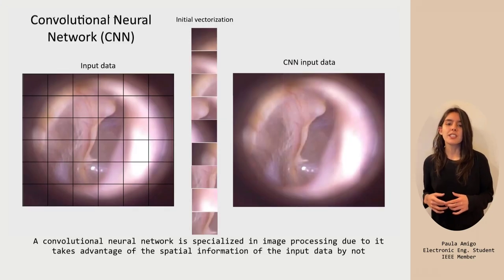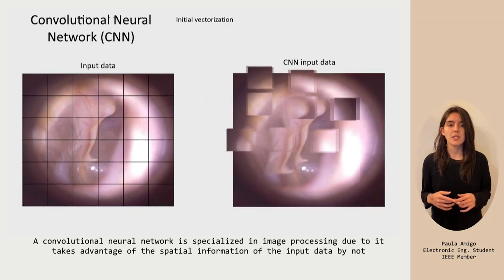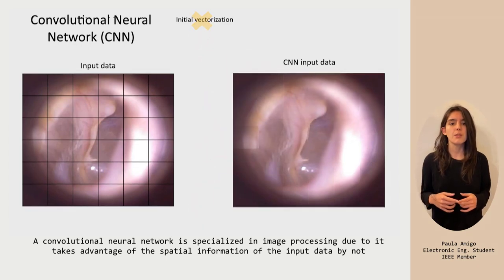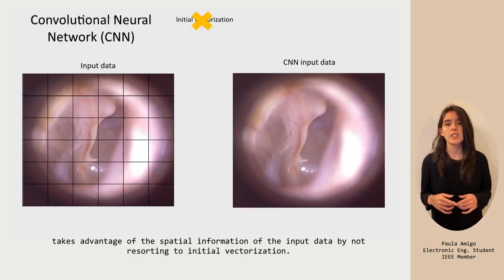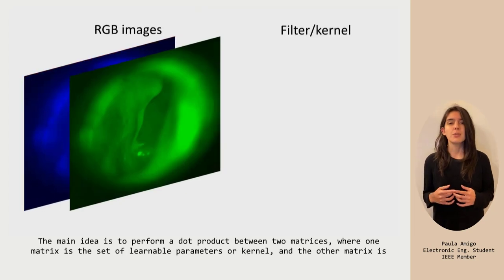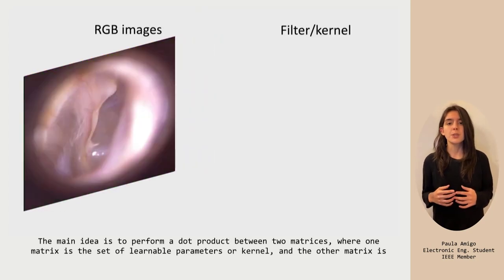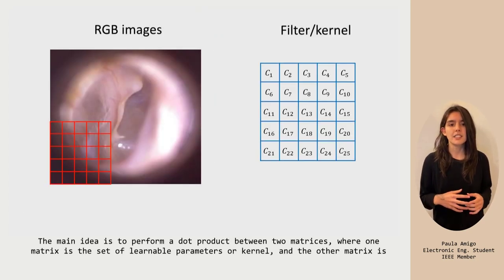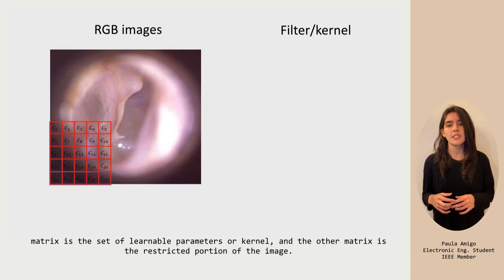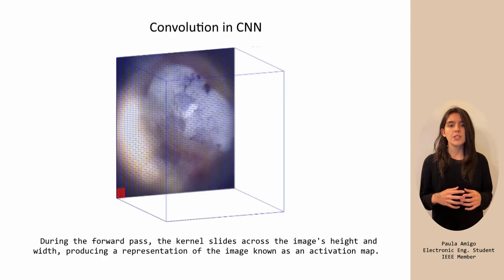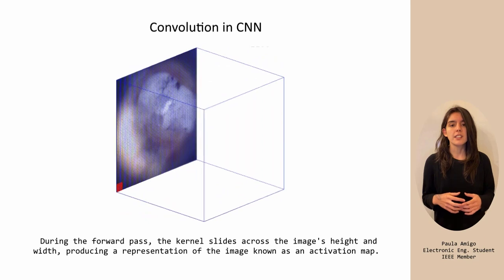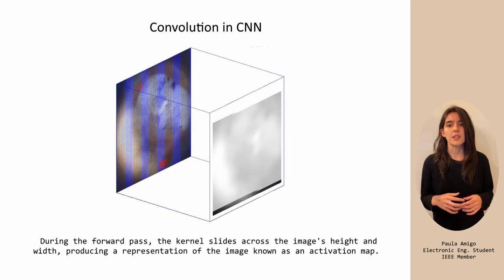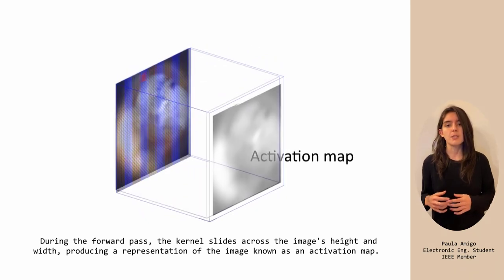A convolutional neural network is specialized in image processing because it takes advantage of the spatial information of the input data by not resorting to initial vectorization. The main idea is to perform a dot product between two matrices, where one matrix is the set of learnable parameters or kernel, and the other is the restricted portion of the image. During the forward pass, the kernel slides across the image's height and width, producing a representation of the image known as an activation map.